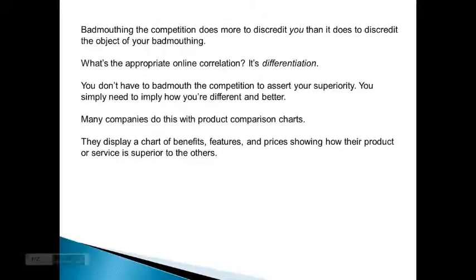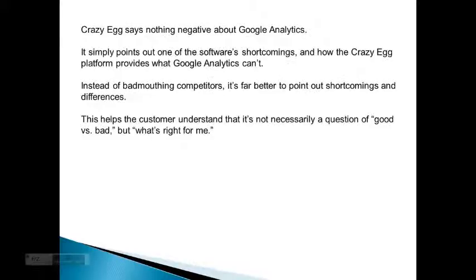Many companies do this with product comparison charts. They display a chart of benefits, features, and prices showing how their product or service is superior to the others. Crazy Egg says nothing about Google Analytics. It simply points out one of the software's shortcomings and how the Crazy Egg platform provides what Google Analytics can't. So, instead of badmouthing competition, it's far better to point out shortcomings and differences. This helps the customer understand it's not necessarily a question of good versus bad, but what's right for me.